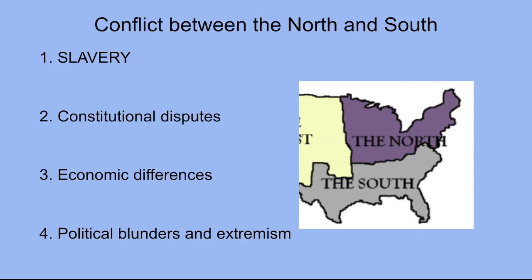Historians have identified at least four main causes of the conflict between the North and the South. Number one, and the most important, is slavery as a growing moral issue in the North versus its defense and expansion in the South — remember, four million Americans were enslaved. Second, constitutional disputes over the nature of the Federal Union and states' rights. Third, economic differences between the industrializing North and the agricultural South over issues such as tariffs, the National Bank, and internal improvements. Fourth, political blunders and extremism on both sides, which some historians conclude resulted in an unnecessary war. Within Congress, there was a lot of political extremism and very little compromise, and some compromise might have helped to avoid the Civil War altogether.